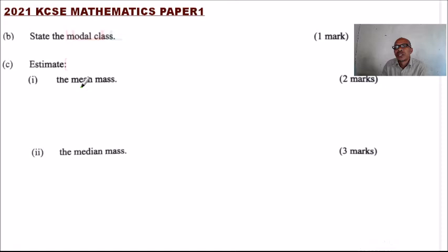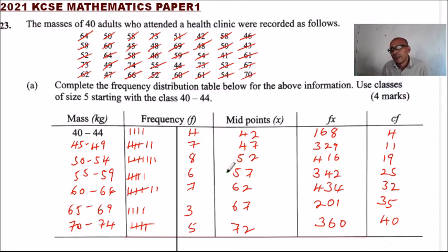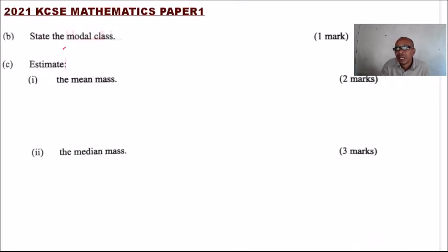Part B requires us to state the modal class. If we go back to the frequency distribution table, the modal class is the one that has the highest frequency. The class 50 to 54 has the highest frequency of 8, so the modal class is 50 to 54.